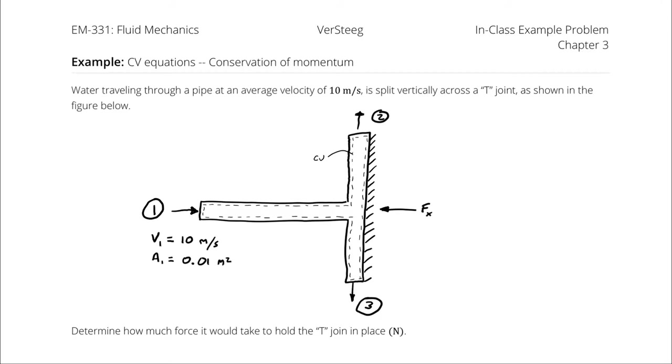Water traveling through a pipe at an average velocity of 10 meters per second is split vertically across a T-joint as shown in the figure below. Determine how much force it would take to hold the joint in place.